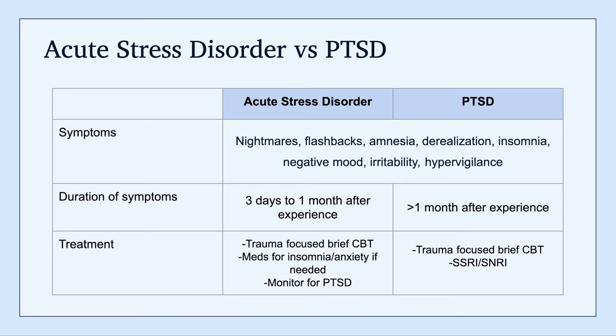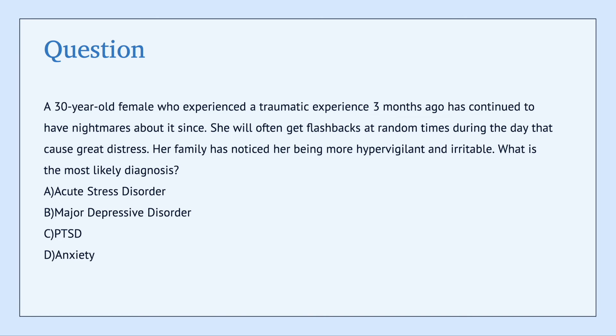Here's a table that describes the differences between acute stress disorder and PTSD, and hopefully that's helpful. Let's try a question to test our understanding. This is a 30-year-old female who experienced a traumatic experience three months ago and has continued to have nightmares about it since. She often gets flashbacks at random times during the day that cause great distress, and her family has noticed her being more hypervigilant and irritable. What's the most likely diagnosis? The options are acute stress disorder, major depressive disorder, PTSD, and anxiety.